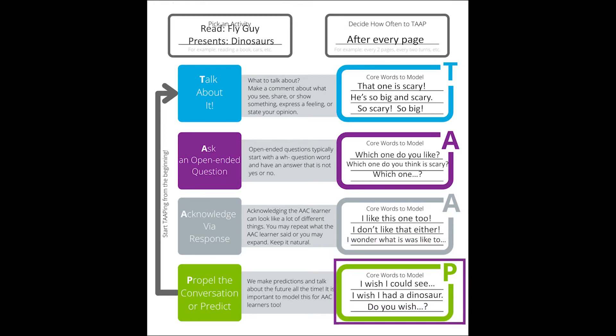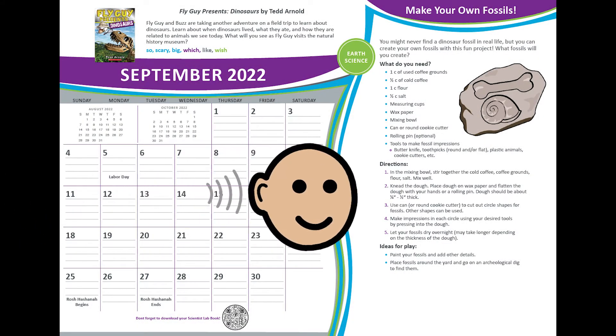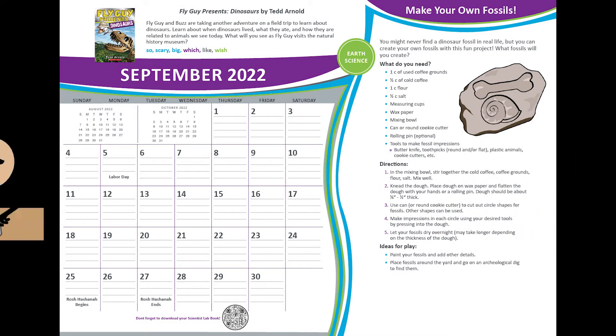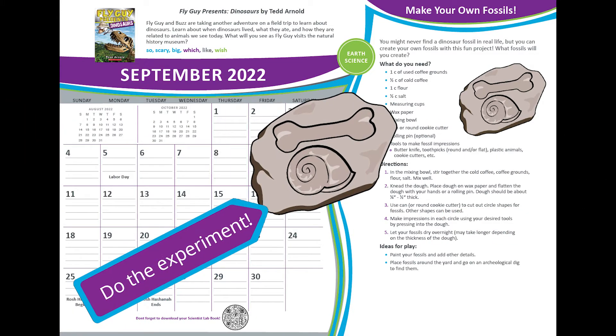Finally, you propel the activity forward or predict. We suggest you model the word 'wish.' You could say: I wish I could see, I wish I had a dinosaur, do you wish? Enjoy simply listening to the story or tap your way through, demonstrating words and locations for the AAC learner on their technology. Find other words that are interesting to the AAC learner and use these words in other activities.